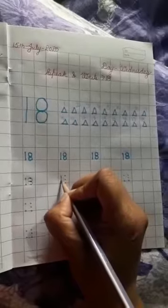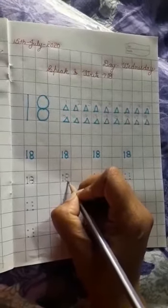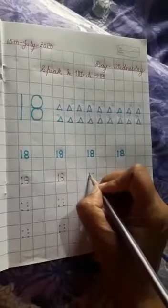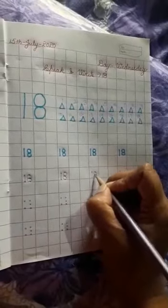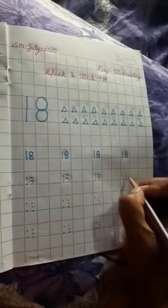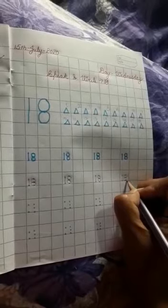Same way draw standing line, circle, then again circle. Standing line, then circle, then again circle. Same way standing line, standing line, then circle, then again circle.